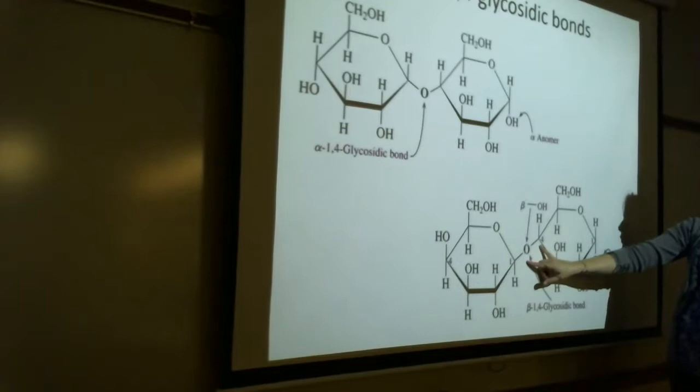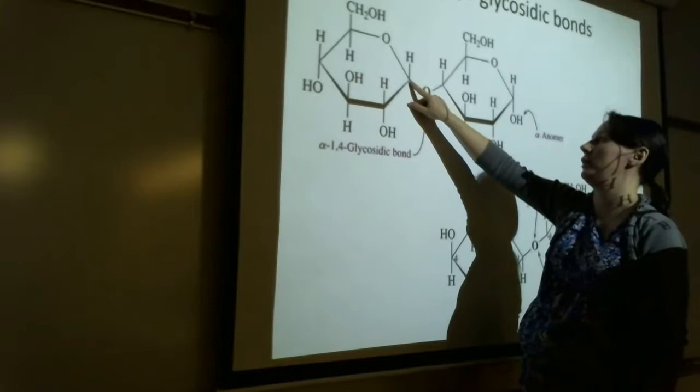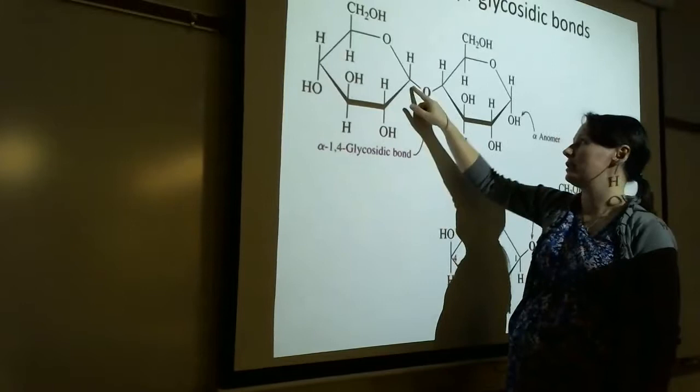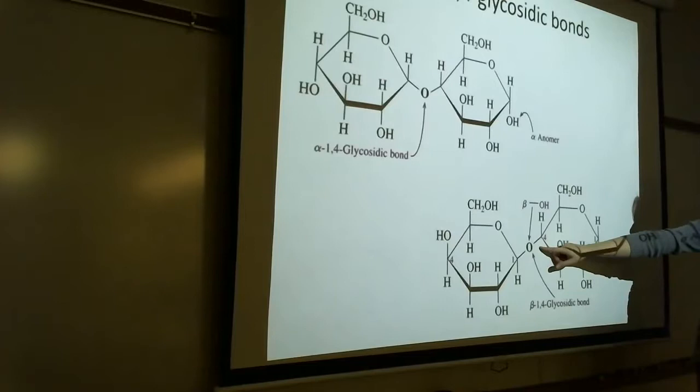This is called 1, 4 because carbon number 1, 1, 2, 3, 4, 5, 6. That's carbon number 1, 1, 2, 3, 4. That's carbon number 4. So that's why it's called 1, 4. And it's called alpha because it has this configuration versus this configuration. Beta 1, 4 looks like this. Alpha 1, 4 looks like this.